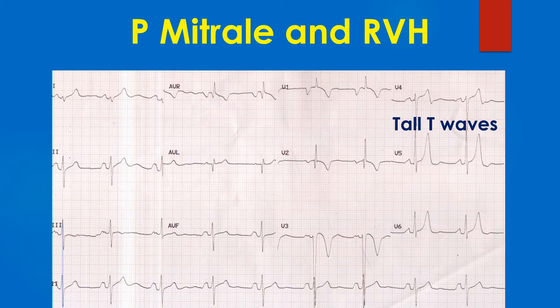The T waves in V5 and V6 are unusually tall. The lead 2 rhythm strip at the bottom of the tracing documents a normal sinus rhythm, which can at any time degenerate into atrial fibrillation in this case with gross left atrial overload.